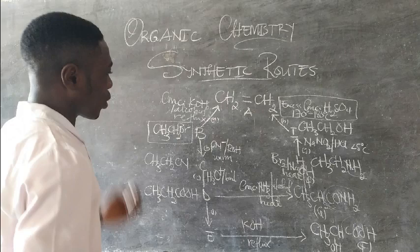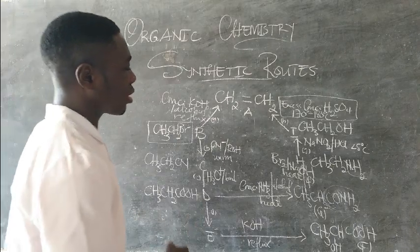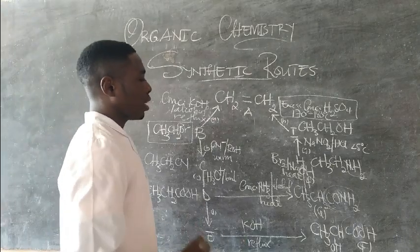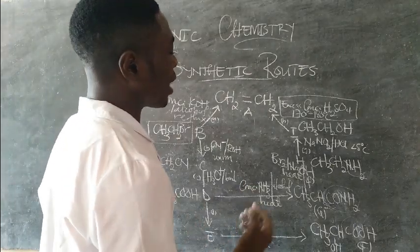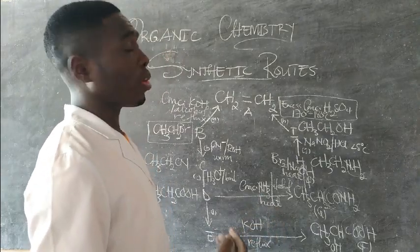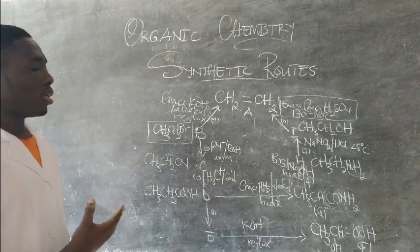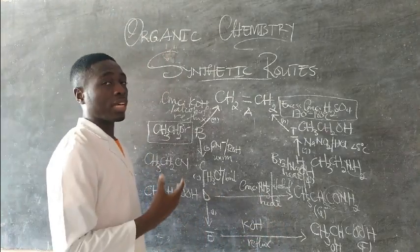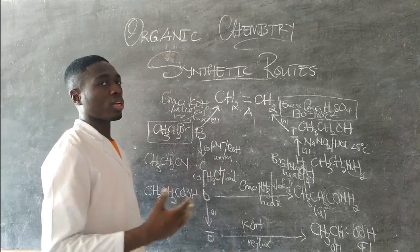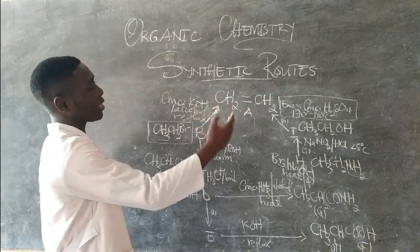The dehydration reaction is done using excess concentrated sulfuric acid at 170 to 180 degrees Celsius. That is my reagent and those are my reaction conditions. Please remember: when they ask for reaction conditions, they ask for temperature, pressure, heat — anything with a molecular formula is not a reaction condition, it is a reagent.